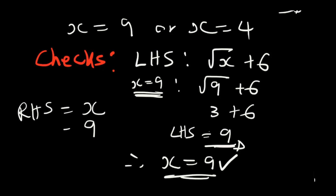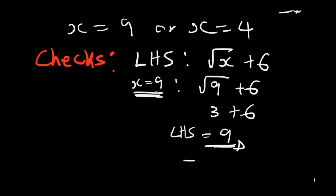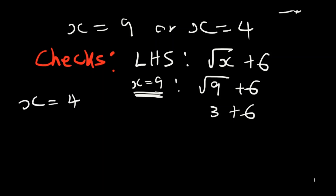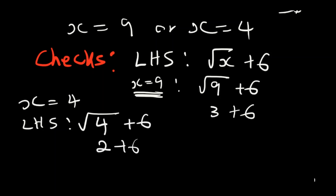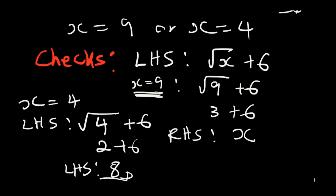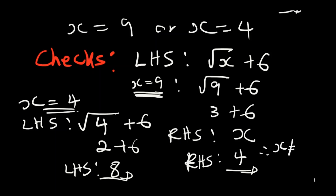Now let's check x = 4. The left-hand side is the root of 4 plus 6, which gives 2 plus 6 = 8. The right-hand side equals x = 4. Since 8 ≠ 4, the left-hand side and right-hand side are not equal, so x is not equal to 4.